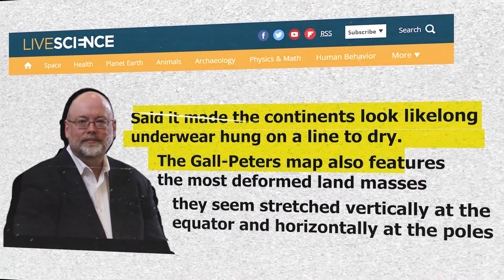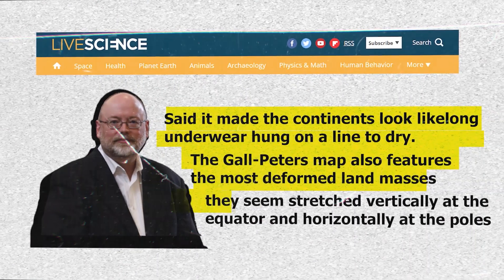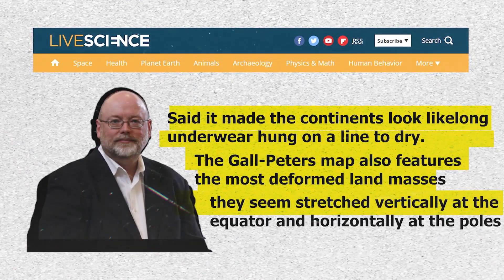The Gall-Peters map also features the most deformed landmasses, as they seem stretched vertically at the equator and horizontally at the poles.